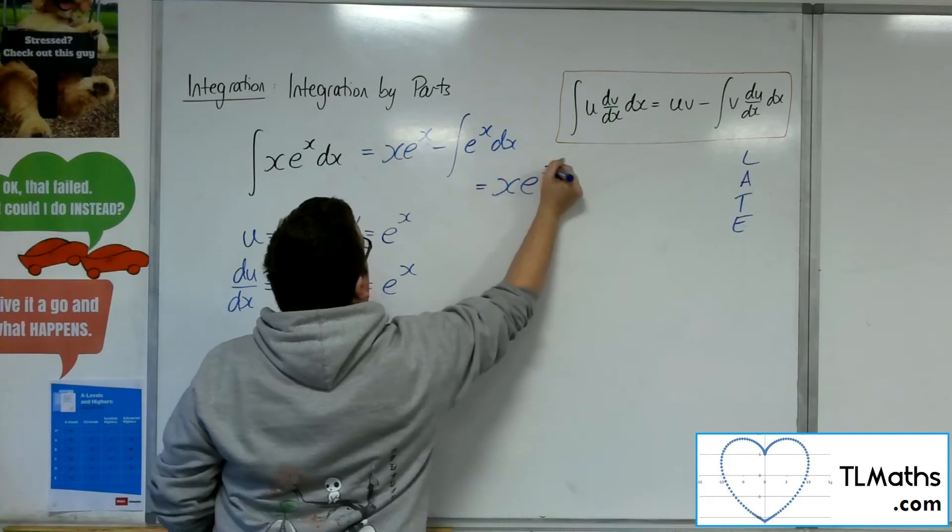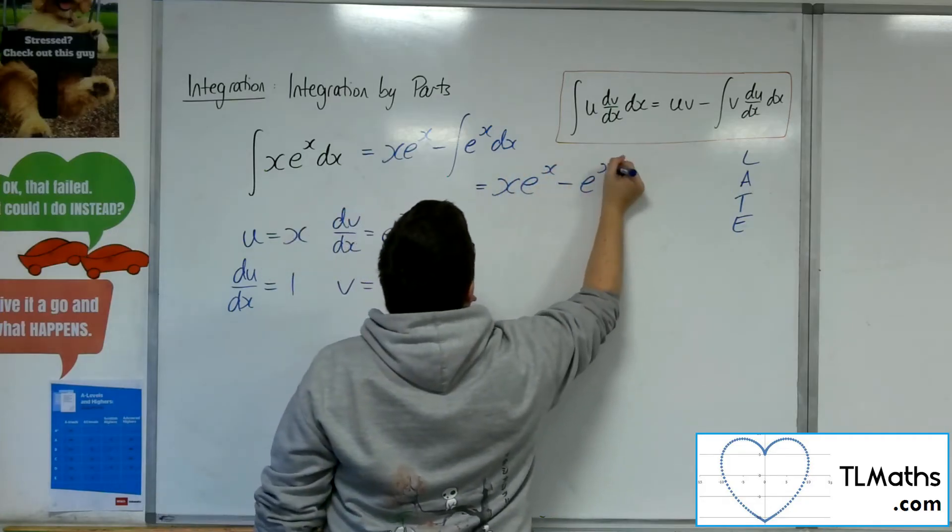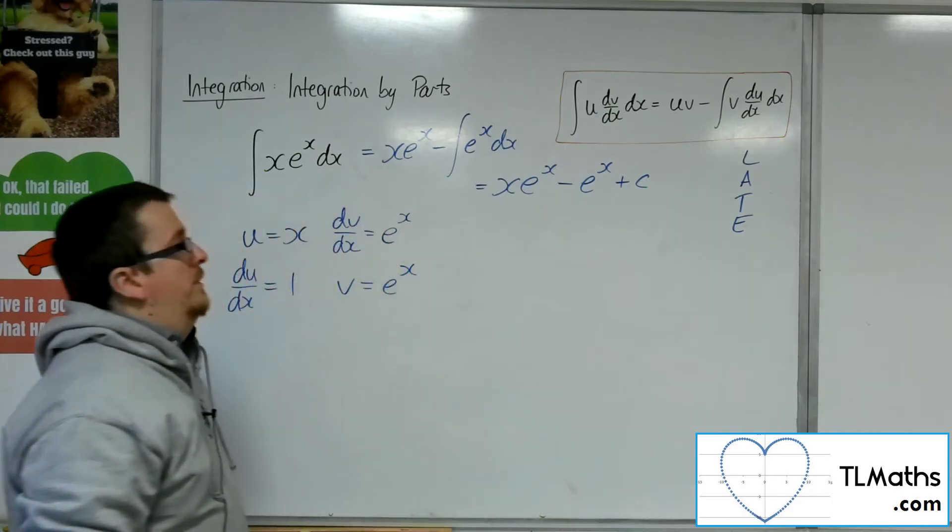And so this is x e to the x, take away e to the x, plus some constant c of integration.